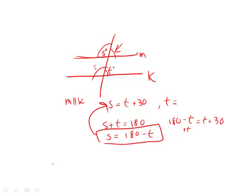Using adding both sides by t, we end up getting 2t on this side. We subtract both sides by 30, so on this side we end up getting 180 minus 30, which is 150. 2t equals 150, t equals 75.